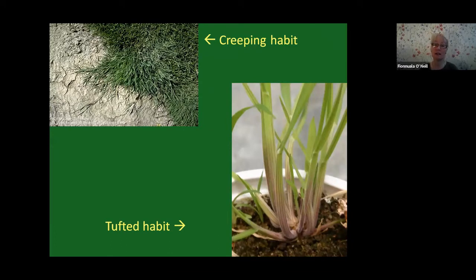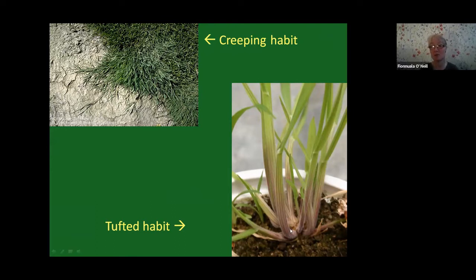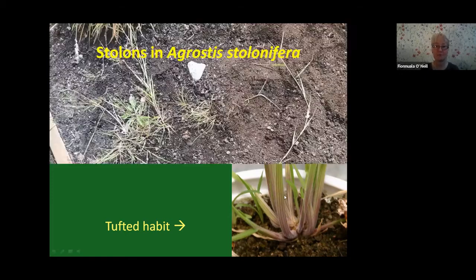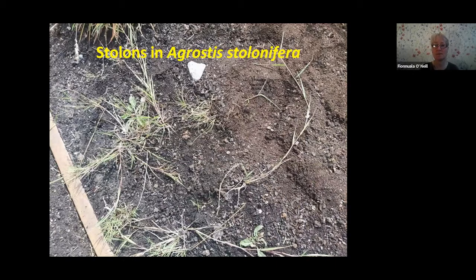On the top left, we have an example of creeping habit — this is Agrostis stolonifera. You can see the stolons creeping out from the edge; this would be common in lawns, spreading across concrete via stolons. The tufted habit here is illustrated by Yorkshire fog, showing lots of individual shoots arising from the same point. The other photograph shows Agrostis stolonifera colonizing peaty bare ground this week in Roscommon.